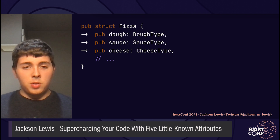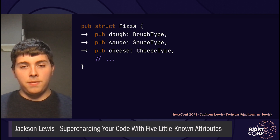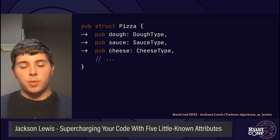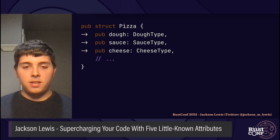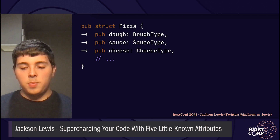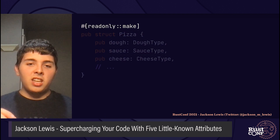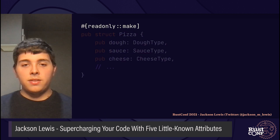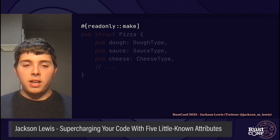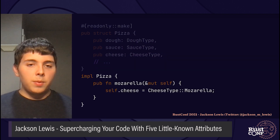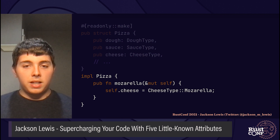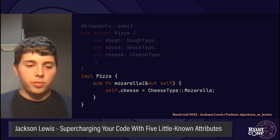The fields are public so that you can read from them directly instead of using a getter function — that's useful. But any programmer could also modify these fields if they owned this pizza variable mutably. Furthermore, since all the struct fields are public, the struct can be initialized elsewhere using raw struct initialization syntax. All of this bypasses the existing functions which are meant to handle state changes and initialization of the pizza struct. But the good news is, there's an attribute to fix this — it's called readonly, and I wish it was in the standard library.